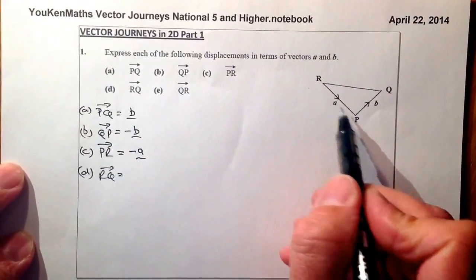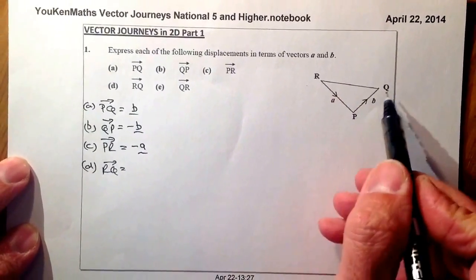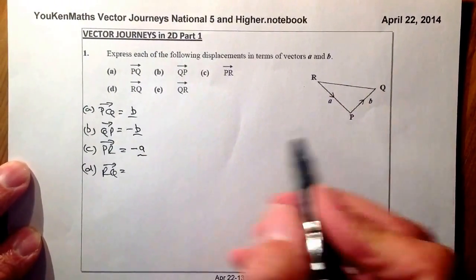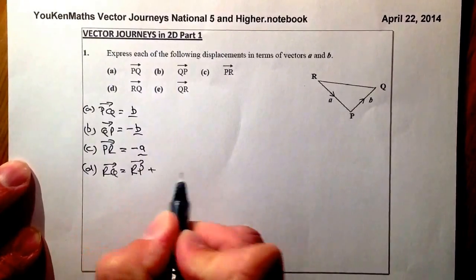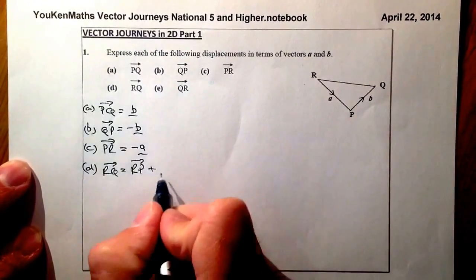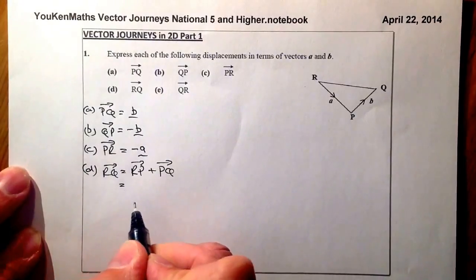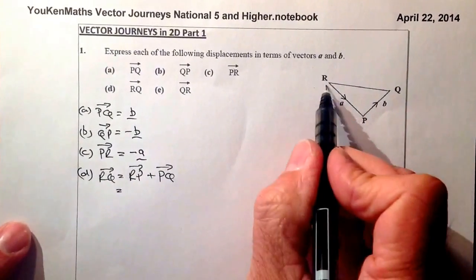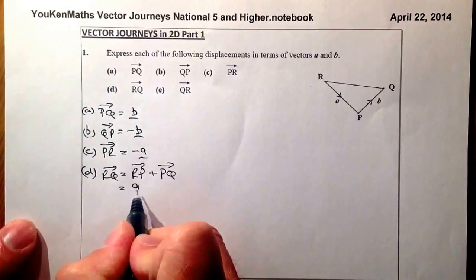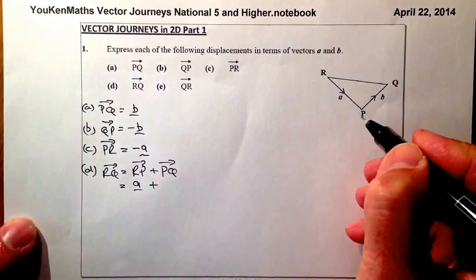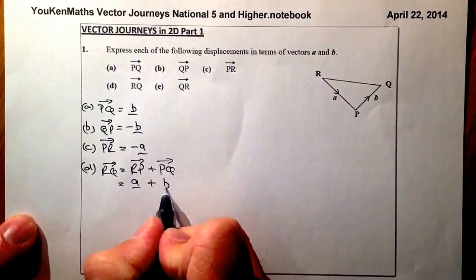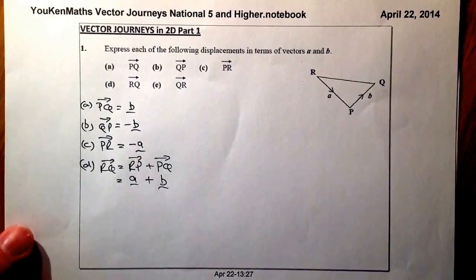So what I'm going to do in this one, I'm going to go down to the vectors that I know. So a simple diagram, I'm going to go from R to P first of all and then I'm going to add on from that P to Q. So the vector R to P is going to be A. I'm going to add on to that the vector P to Q. P to Q is B. So there's my answer. It's A plus B.